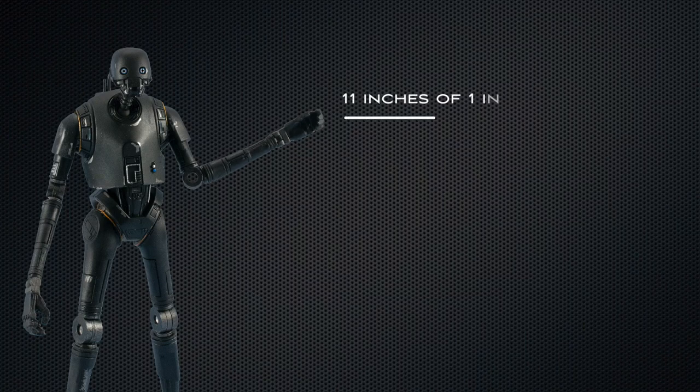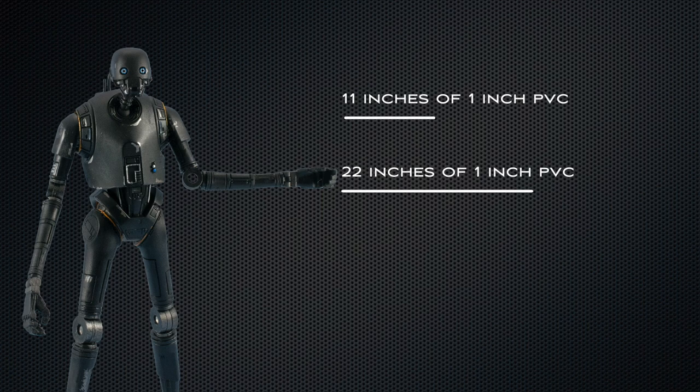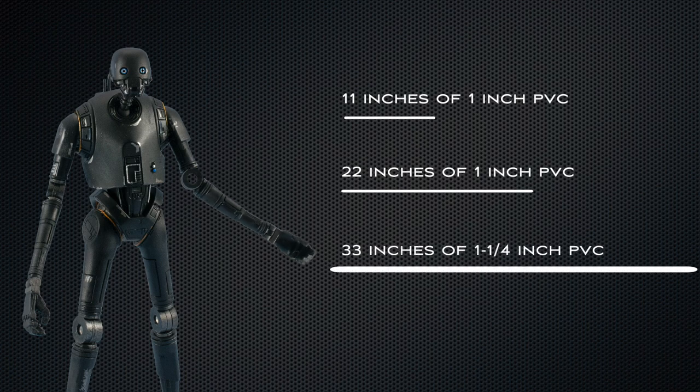You should now have an 11 inch length of one inch PVC pipe, a 22 inch length of one inch PVC pipe, and a 33 inch length of one and one quarter inch PVC pipe.